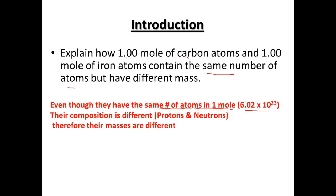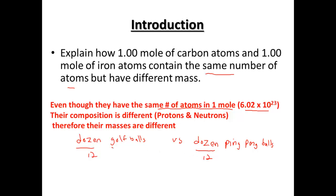Carbon, a much smaller atom, weighs much less than a mole of iron atoms. Let's say you had a dozen golf balls versus a dozen ping pong balls. Both of them are 12, but the golf balls weigh way more than the ping pong balls do. There's much more mass in the golf balls even though they're the same amount. Atoms are just the same way — you might have the same amount of them, but they weigh differently.